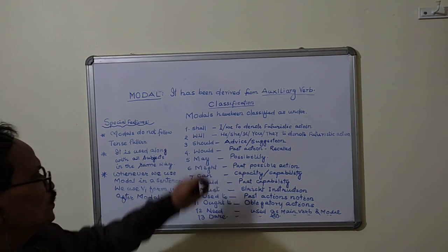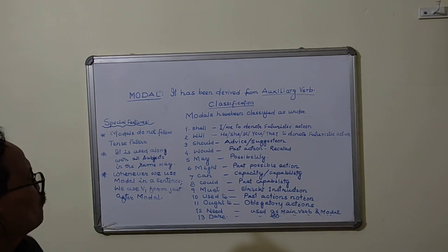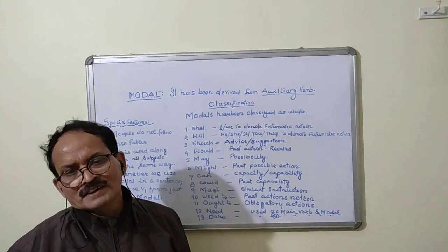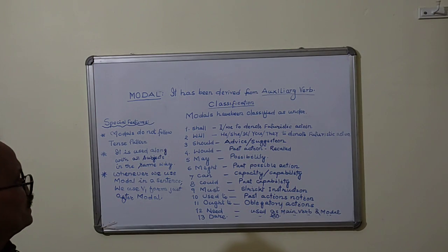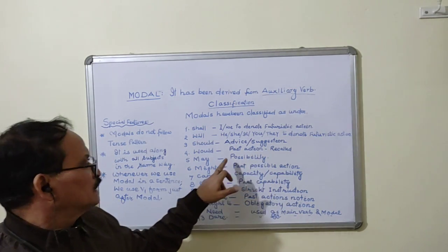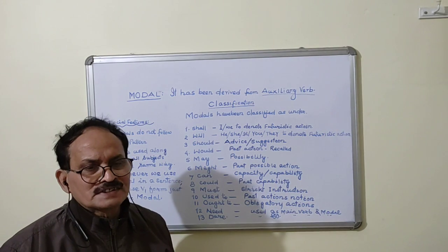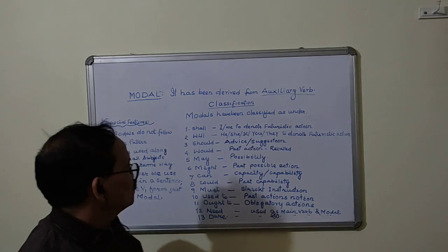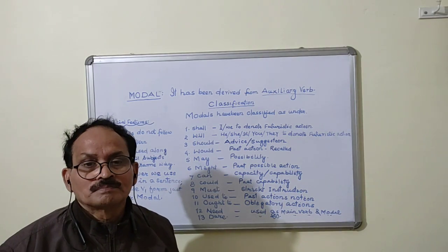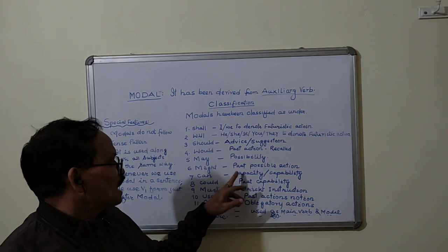Number four is would. It is also a model and past form of will. It is used to denote past actions under which past actions are recalled by the subject. May indicates possibility means the subject is in position to take some action which is under possibility not surety. For example, if I say you may pass the exam means you are not certain to pass the exam.